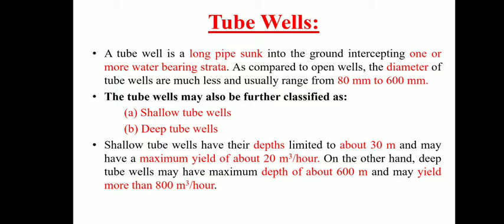We classify tube wells as shallow and deep wells. For shallow wells, the depth is up to 30 meters and the maximum yield is 20 cubic meters per hour. For deep wells, the maximum yield is 800 cubic meters per hour and the maximum depth is 600 meters. This is the basic difference between the two types, and it is just a simple classification.